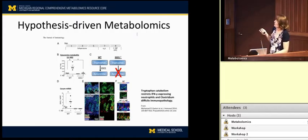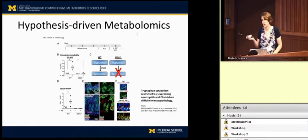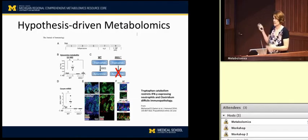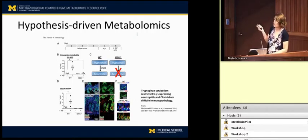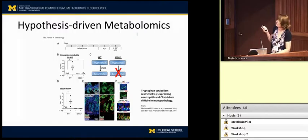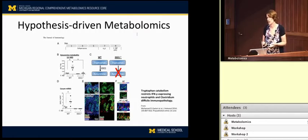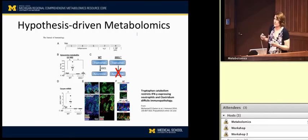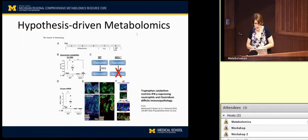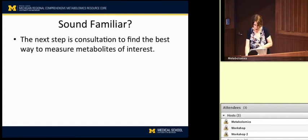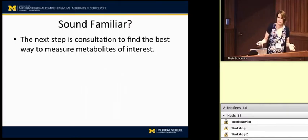This established a link between kynurenine levels and a less severe outcome of the infection. They didn't have a mechanism yet — the rest of the paper goes on to elucidate that. The point is that the metabolomics was really the first step in this study and an important step to make the link between what they thought was happening and the mechanism they could come up with.